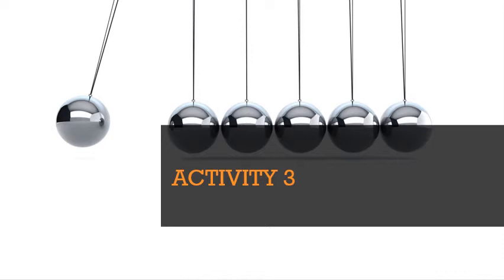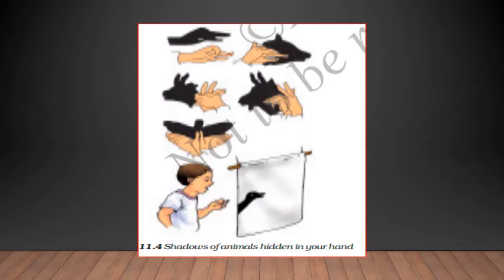The ground, walls of the roof, walls of the room, a building or other such surfaces act as a screen for the shadow you observe in everyday life. You should have a proper screen in the background so you can see the shadow formation properly.